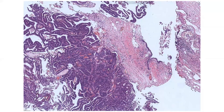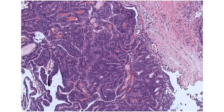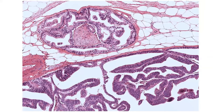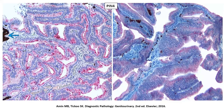Sometimes papillae are very closely packed, and you can make out the lining of the prostatic urethra — this is a centrally located ductal adenocarcinoma with a purely papillary morphology where the papillae are coalescent, but you can spot the fibrovascular cores. This case also shows perineural invasion with the nerve caught in transverse section, another feature of ductal adenocarcinoma.